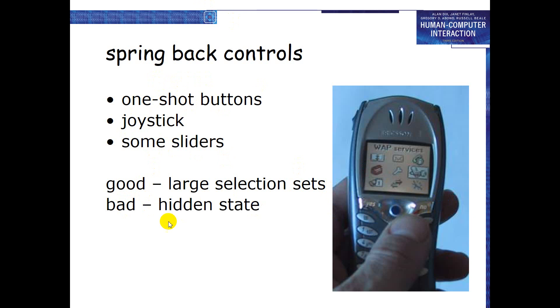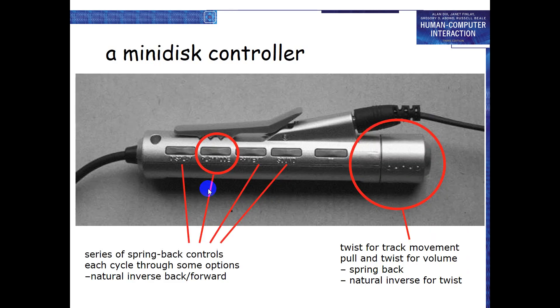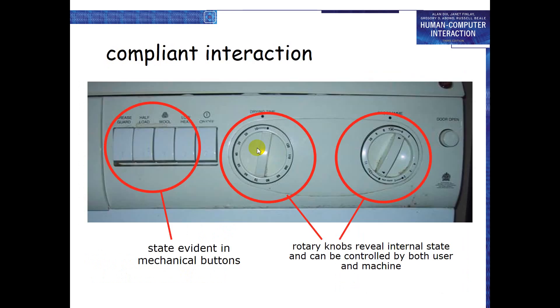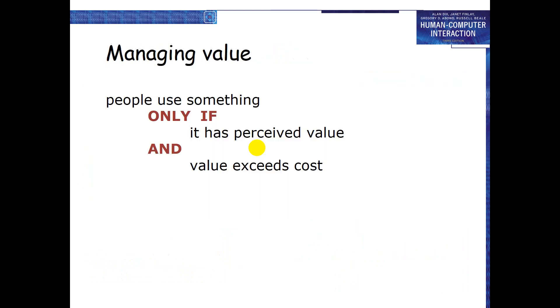One issue with spring back controls is a bad hidden state — you may not know which state the control is currently in: whether it is pressed or has returned. The mini disk example was given to illustrate this. Physical layout is the next concept.